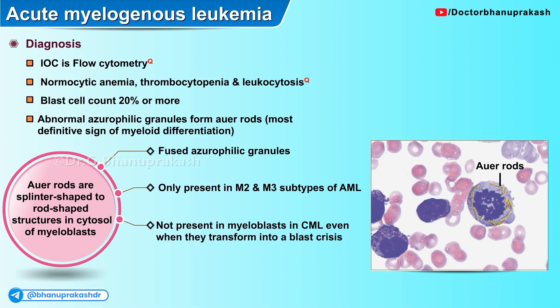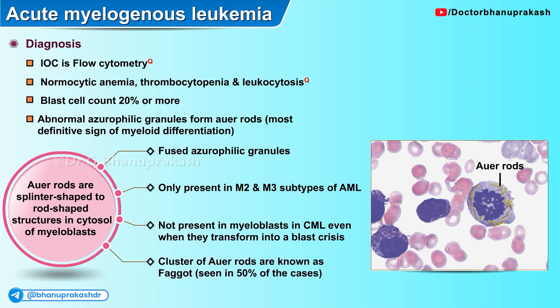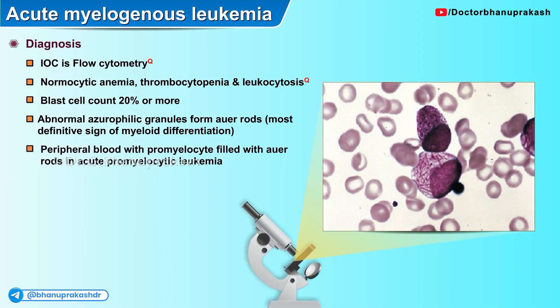Auer rods are not present in the myeloblasts of chronic myelogenous leukemia, even when they transform into an acute blast crisis. Clusters of Auer rods are known as faggots, and faggots are seen in close to 50% or more of cases of acute myelogenous leukemia. A histopathological slide shows peripheral blood with promyelocytes filled with Auer rods in acute promyelocytic leukemia, with numerous splinter-shaped inclusions in the cytoplasm.